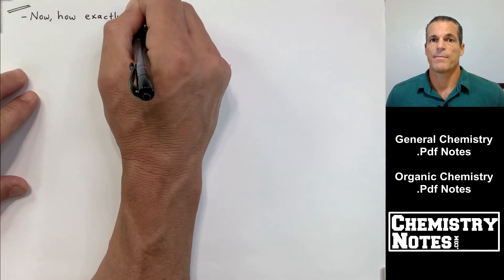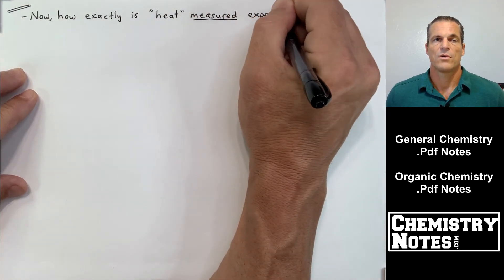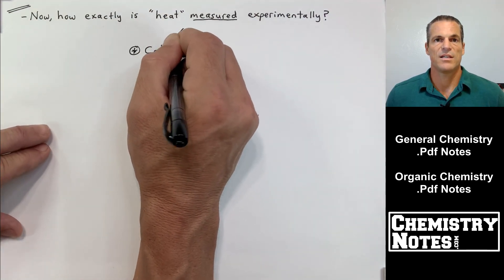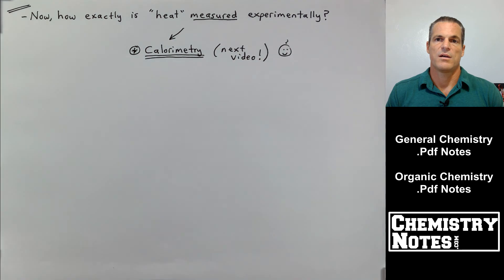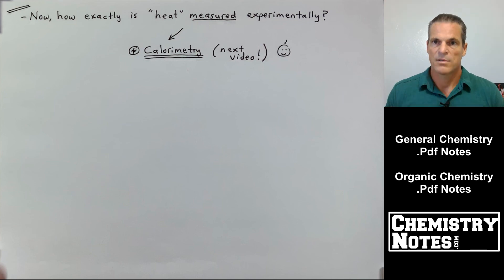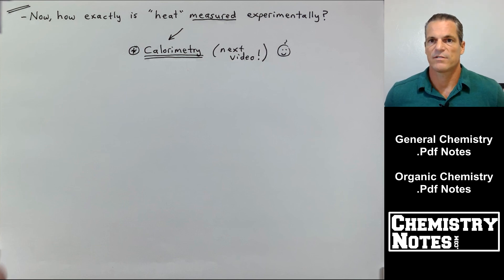So we've talked about internal energy and its relationship to Q (heat) and work W. We've covered two equations: W equals minus P delta V, and delta E equals Q plus W. We've talked about expansion, compression, and the signs of work. How exactly can we measure heat Q experimentally? That's the next video — it's on calorimetry. Hopefully you'll stick around for that video. Take care.